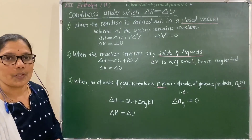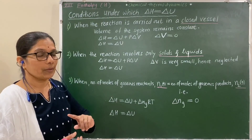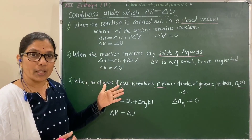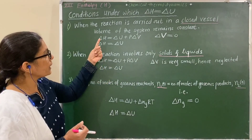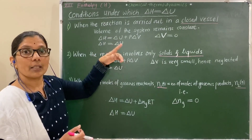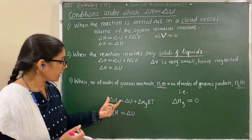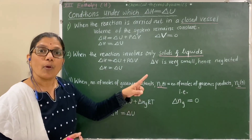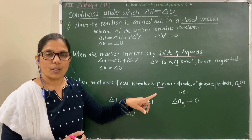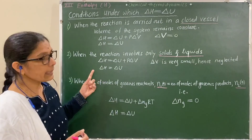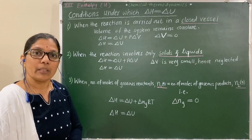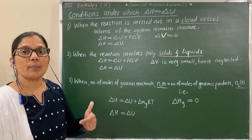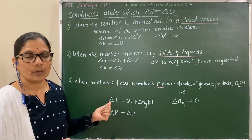In today's session we studied enthalpy, change in enthalpy, how it is related to ΔU at constant pressure, and the relationship between ΔH and ΔU for chemical reactions along with the conditions under which they are equal. In the next session, we will solve numericals based on this topic.